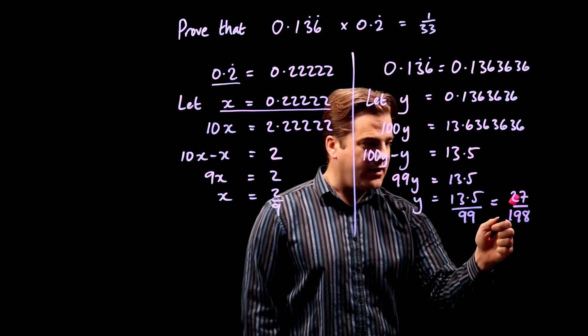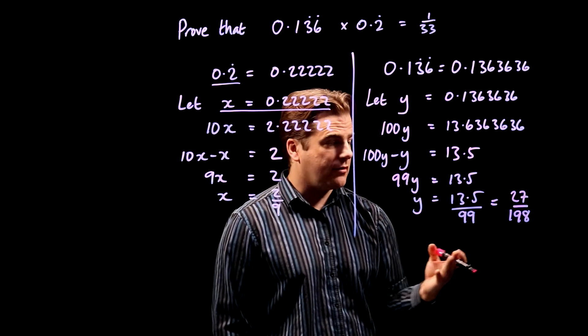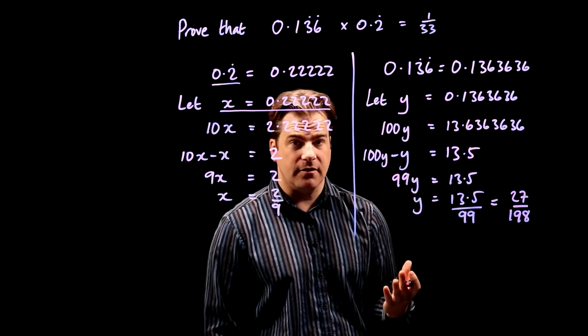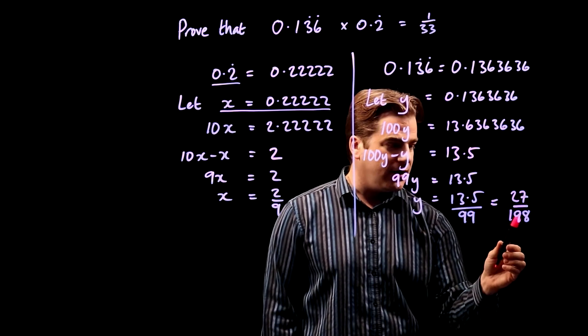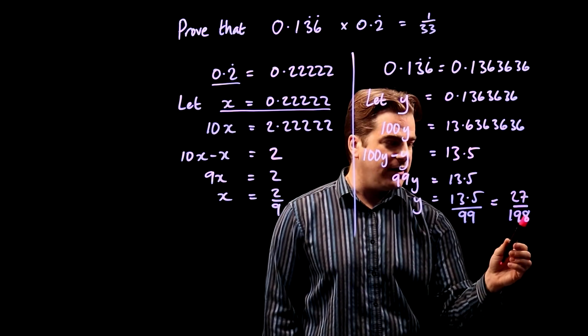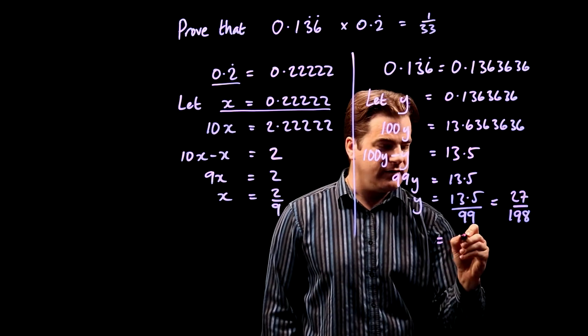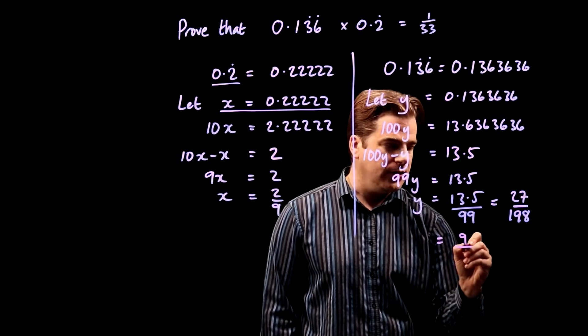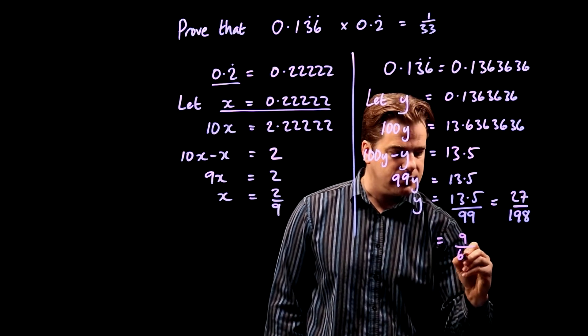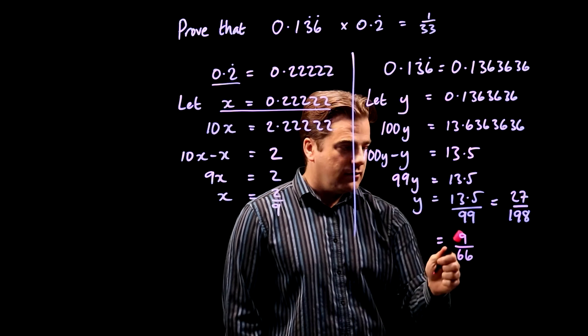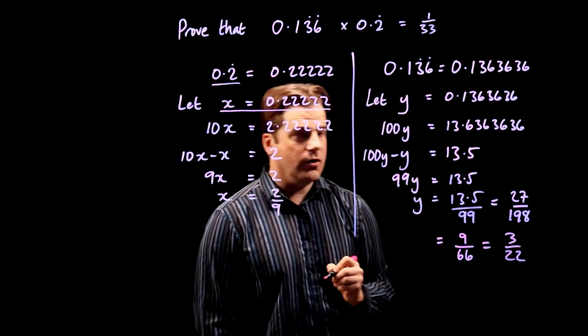Right. Can we simplify that? Well, 27 is divisible by 3. Is this number divisible by 3? To check if something is divisible by 3, add up the digits. If that number is divisible by 3, the original is divisible by 3. So 1 plus 9 is 10 plus 8 is 18. It is divisible by 3. So 27 divided by 3 is 9. 198 divisible by 3 is 66. They're also divisible by 3. So 3 over 22. Good.